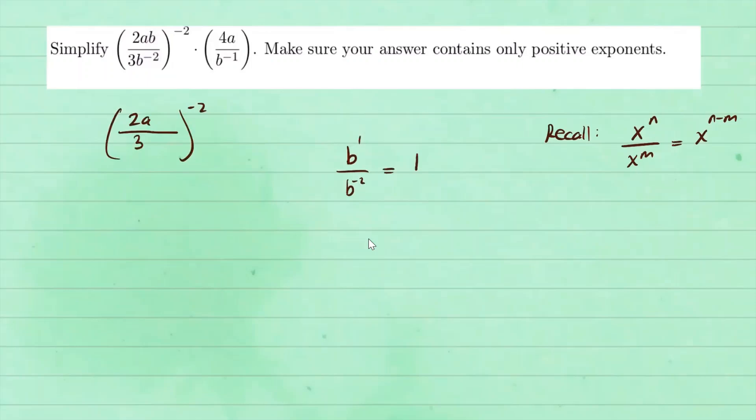Using that rule, this is b to the one minus negative two. So that would be b to the positive three. So that's what I'm going to write right here.